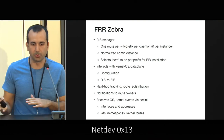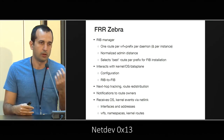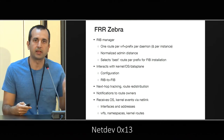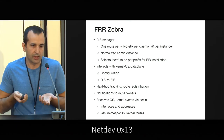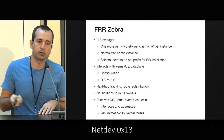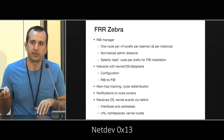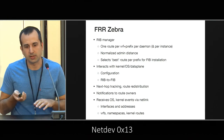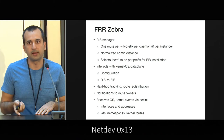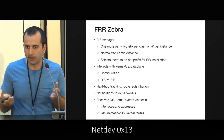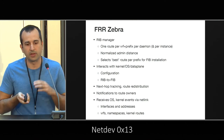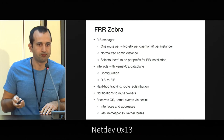Zebra also handles nexthop tracking — so if you have a recursive nexthop that needs to be resolved to an interface address, that's Zebra. And route redistribution: you can notify owners of routes on changes. Zebra also listens to netlink link events — in general, link state changes or addresses assigned to new interfaces and stuff like that.